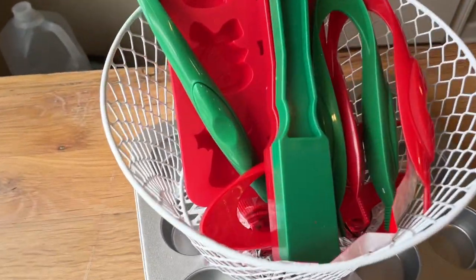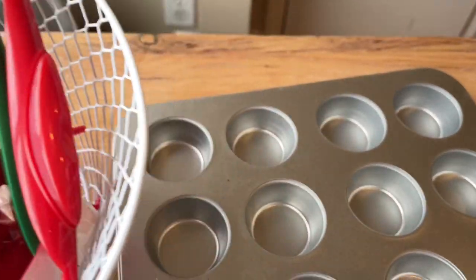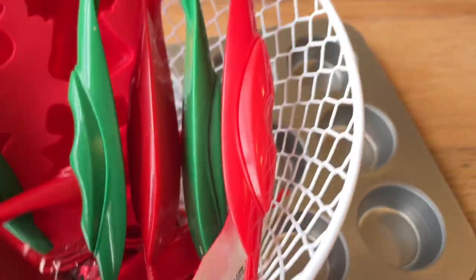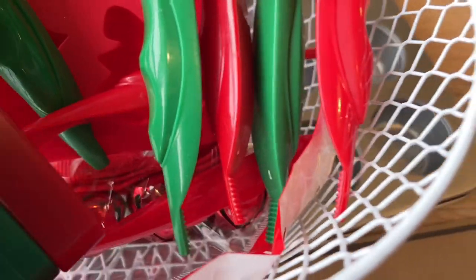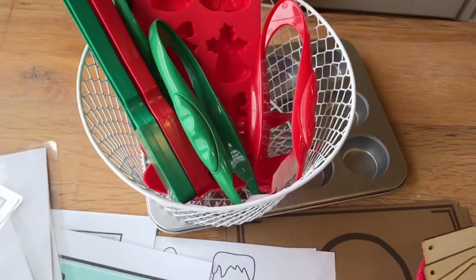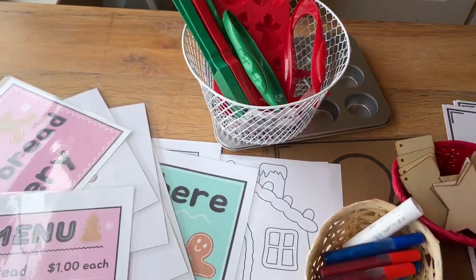In my sensory bin, I think I'm going to just do a bunch of pom-poms with these little tweezers. I have some magnet ones there. I think I'll put some jingle bells in there. And ice cube trays for them to fill with pom-poms and jingle bells.